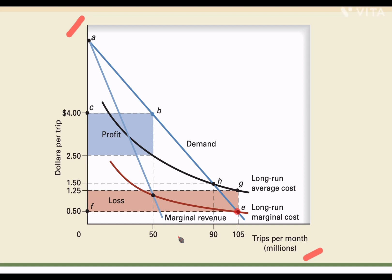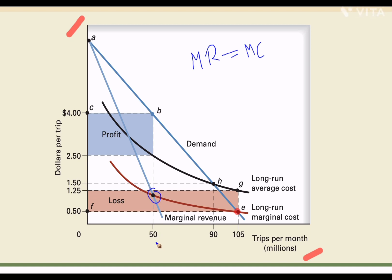Now we'll see what a regulatory body would do if this firm is a private body with the goal of maximizing profit. A profit-maximizing firm sets its output where marginal revenue equals marginal cost. Here, that happens at 50 trips per month. Based on the average revenue curve, the firm would set its price at $4 per trip.